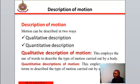Quantitative description of motion employs particular types to describe the type of motion carried out by a body.